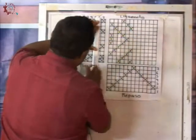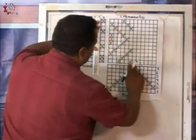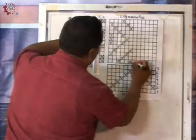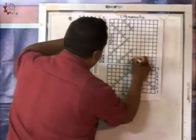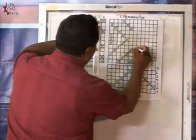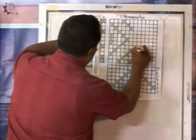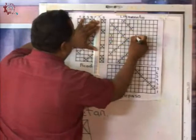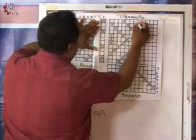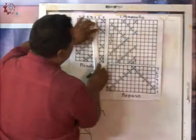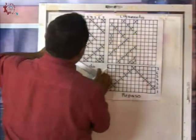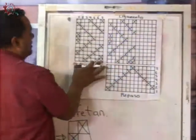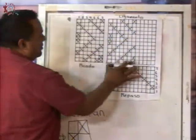Y por último, el número siete: tomo dos, dejo dos, tomo uno, dejo tres, tomo uno, dejo dos y tomo uno. Y hasta aquí prácticamente copié los primeros siete hilos.